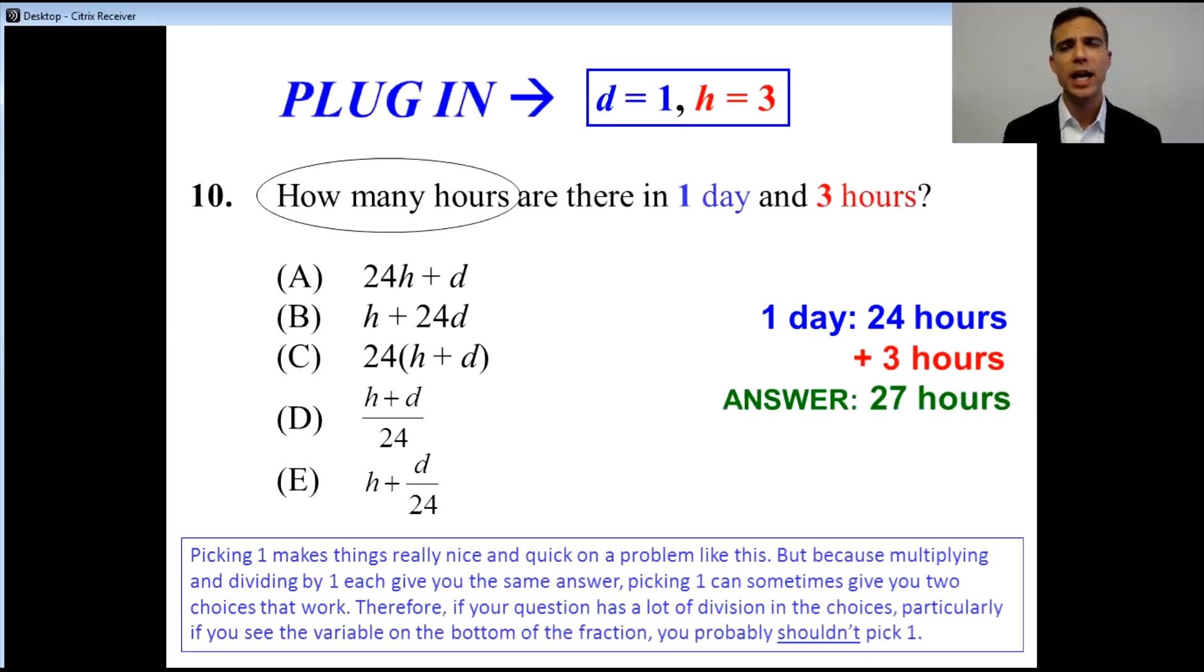So the question now wants to know how many hours are there in one day and three hours? Well, in one day, it's 24 hours. In three more hours than that, we've got 27.